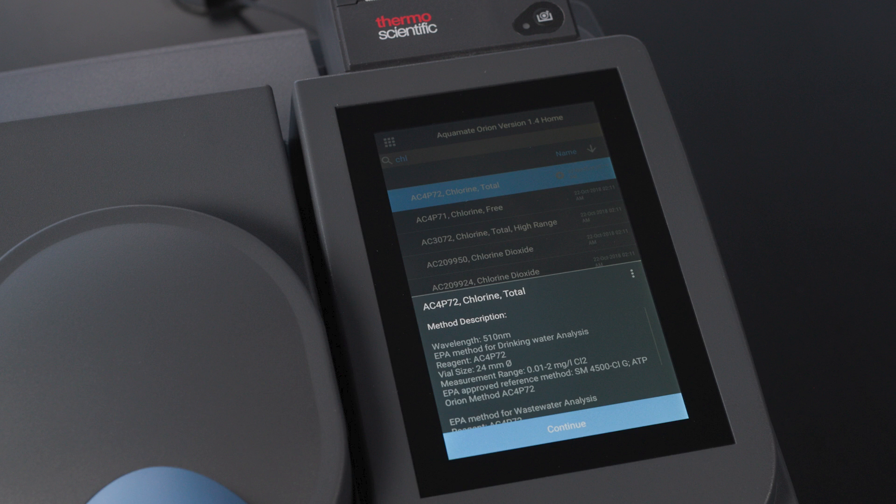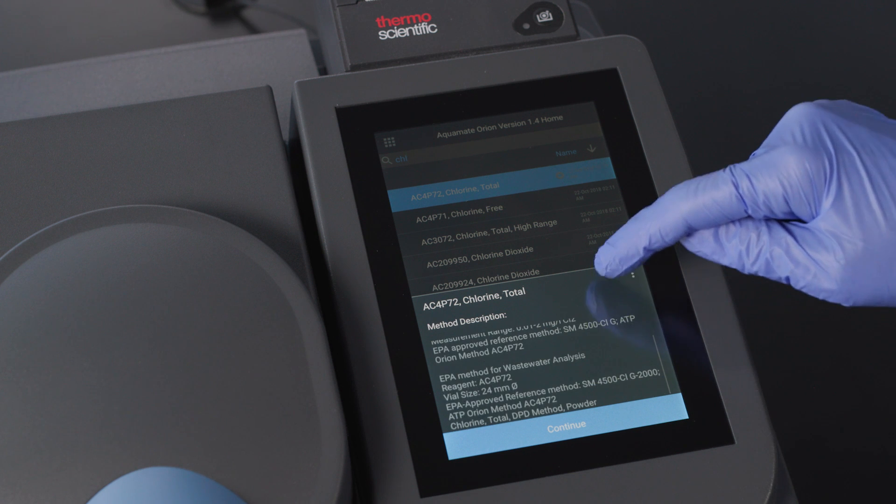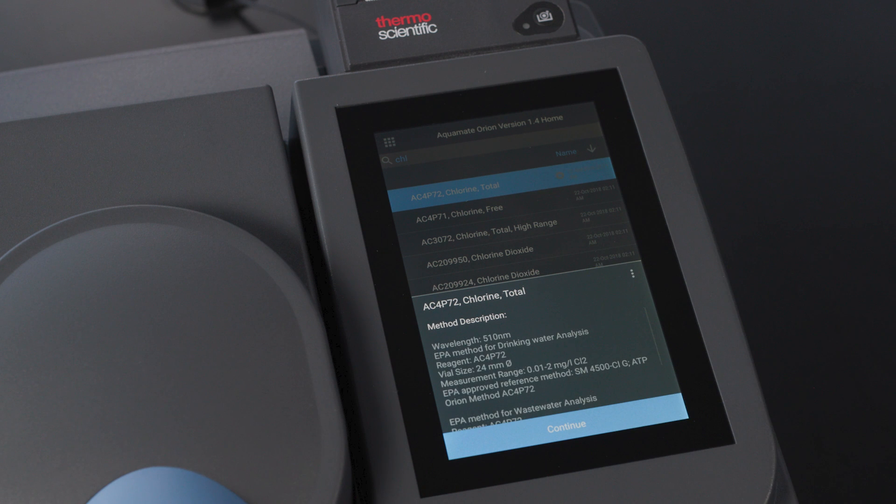When the method is selected, we will find that a lot of information is available in this first screen. We can see that the wavelength is 510 nanometers and that the method is EPA approved for drinking water and wastewater. We can see the reagent number again, the necessary vial size, and the measurement range. There is a lot of detail in this screen.